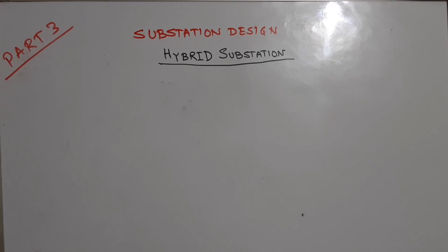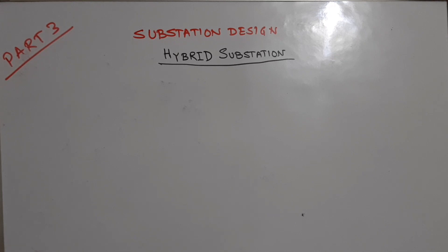In the previous video we discussed about gas insulated substation and air insulated substation switchyard. In this video we will be looking at hybrid substation — what it is and how it is different from other types of substations. A hybrid substation is basically a combination of GIS and AIS.